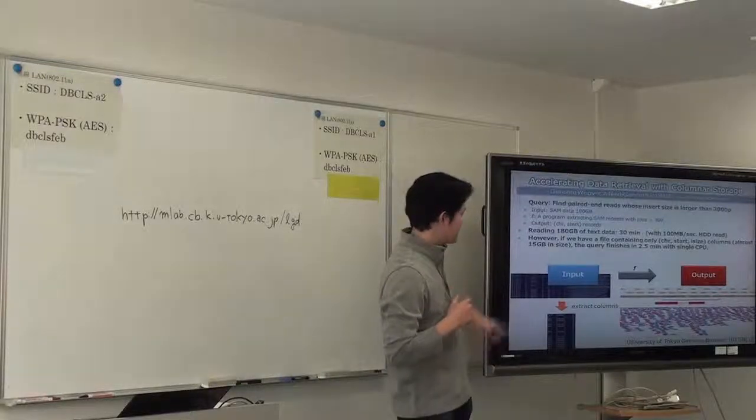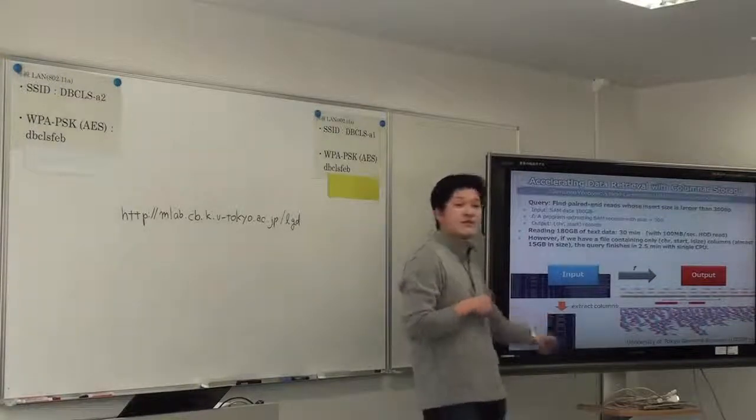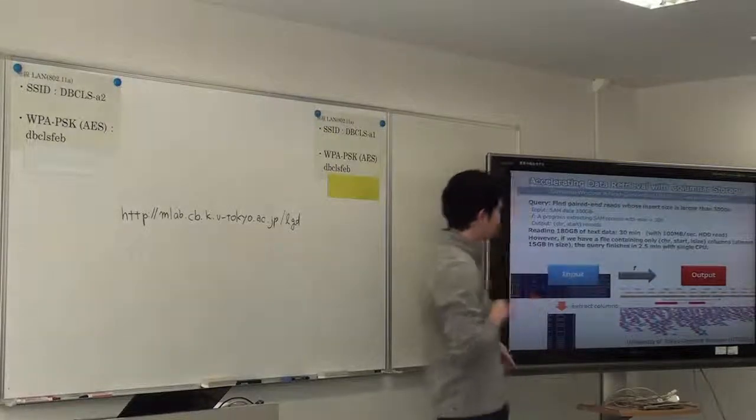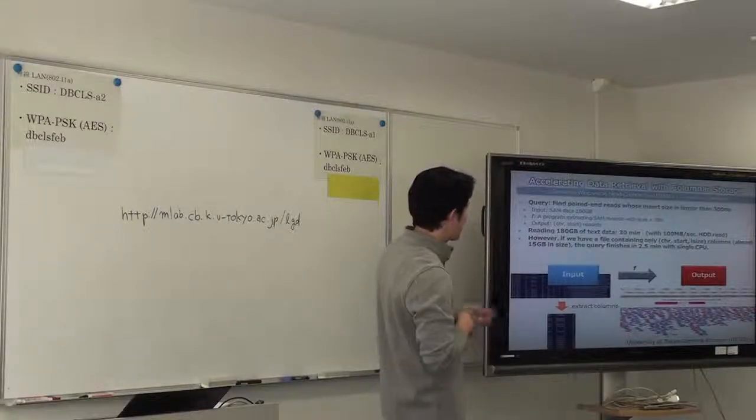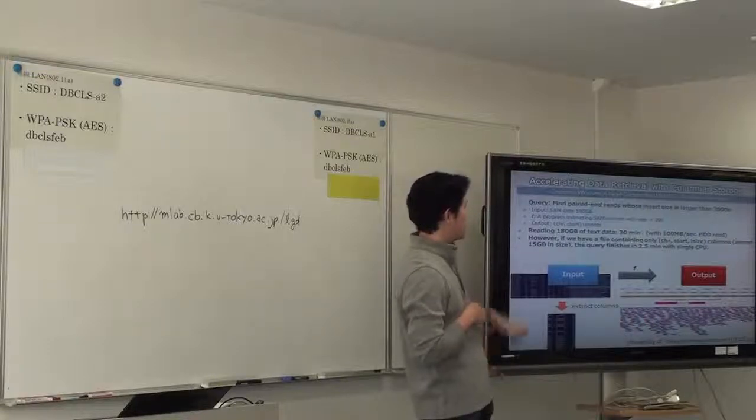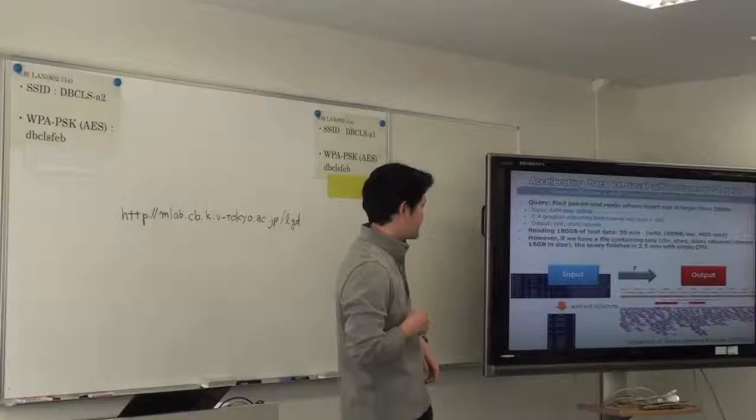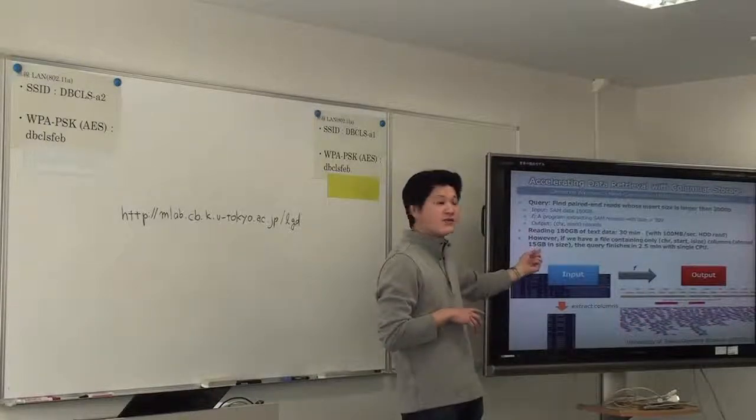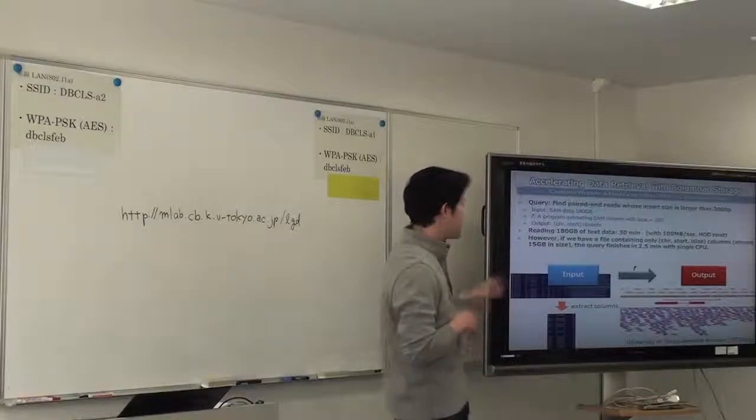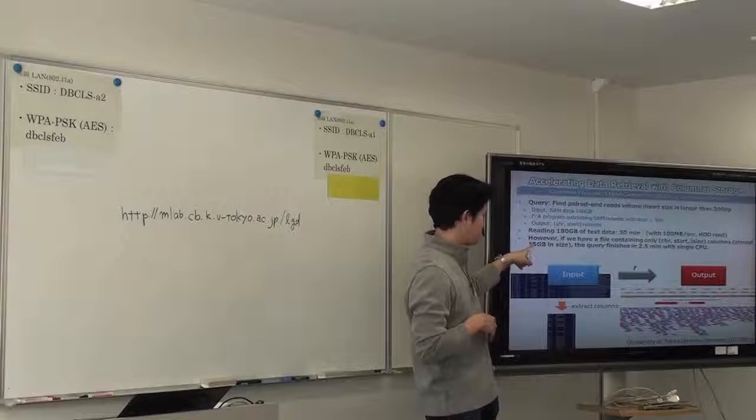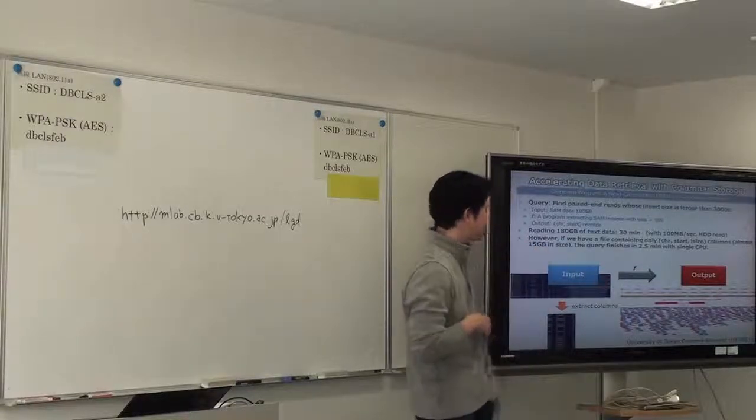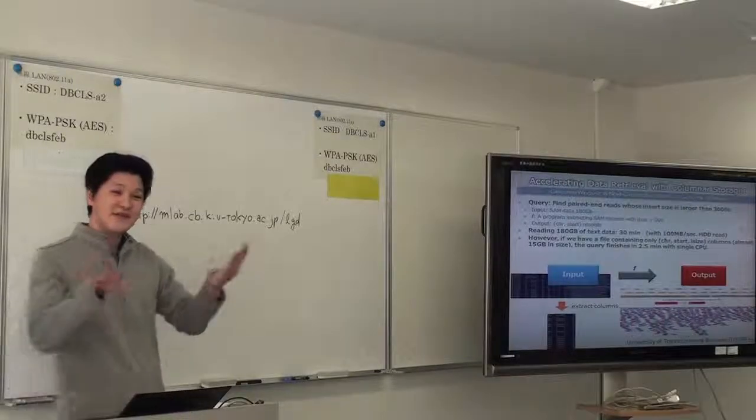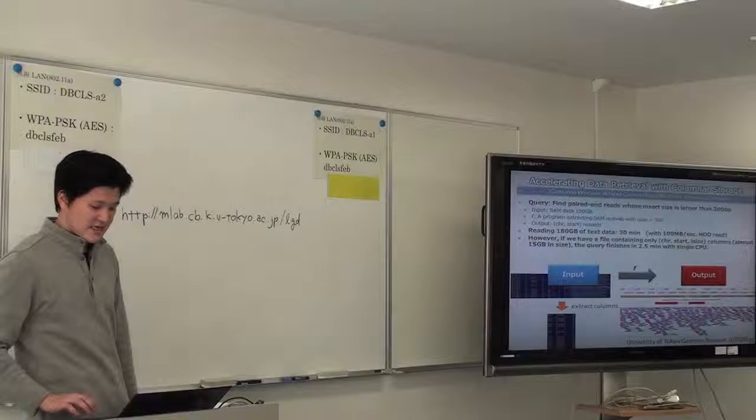If we use columnar storage, columnar storage means extract columns which is obviously required. This size is 15 gigabytes. So we can reduce 100 gigabytes of data. In this query, we only care about this small subset, not the entire dataset. So if we have a speedup, disk IO speedup happening on the data side, this can reduce query time to less than 3 minutes by using single CPU. If we can use multiple CPUs, we can further increase the performance.